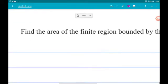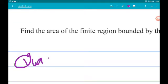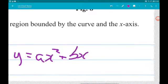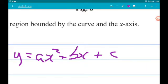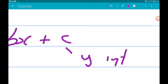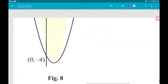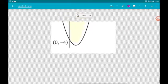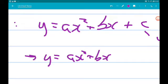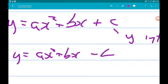So, quadratic in general is y equals ax squared plus bx plus c. Now, c is the y-intercept. We know that the y-intercept is minus 4. So, we can say y equals ax squared plus bx minus 4. Good.